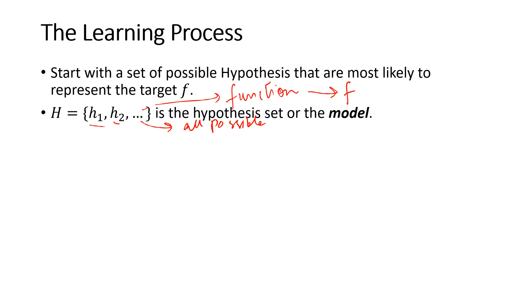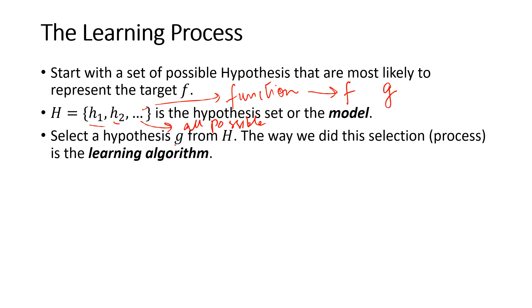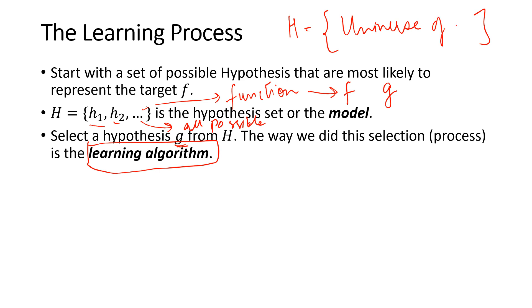My learning algorithm is going to start picking up these hypotheses and try to come up with an approximation that is closest possible to my f. The one that is finally picked will be denoted by g, and we will use that throughout. When I select a hypothesis from H, that's called g. The learning algorithm is the sequence of steps that I follow to pick one of these. Basically, H will have a set of functions — maybe all universal functions — but I just need one to approximate my f, and that one is going to be my g.